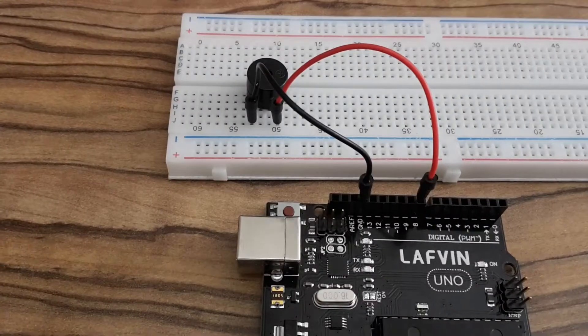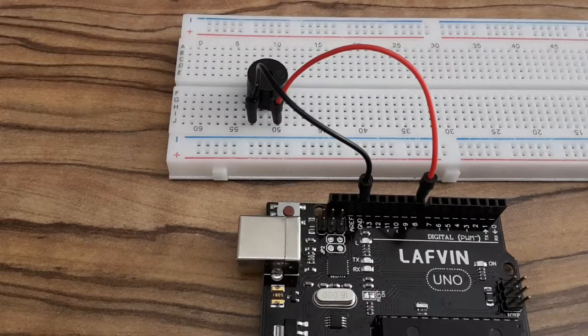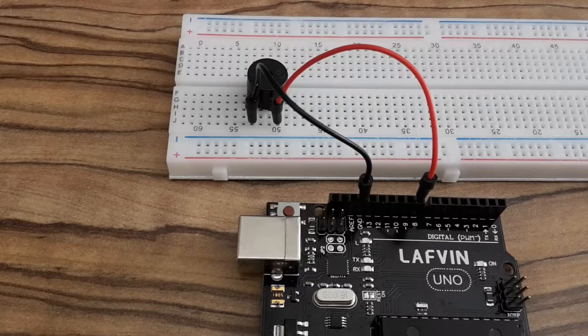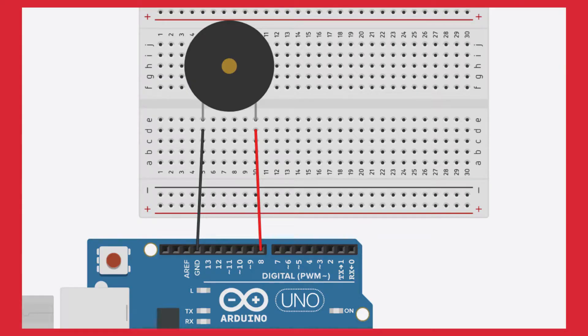If you connect all components together it looks like this. It's a very simple circuit today. This is the circuit diagram for today's project. The positive terminal of the buzzer is connected to pin 8, and the negative terminal is connected to the ground. Nothing else.